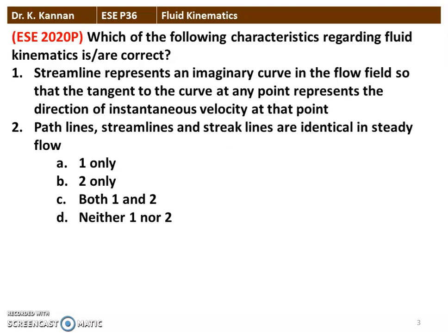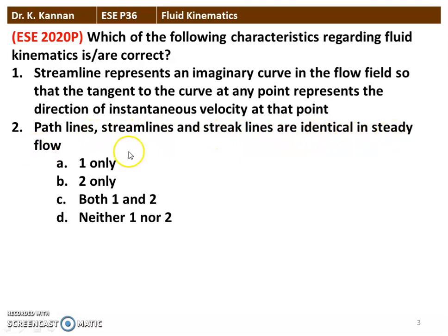Next question from the 2020 question paper: which of the following characteristics regarding fluid kinematics is correct? Statement 1: stream line represents an imaginary curve in the flow field so that the tangent to the curve at any point represents the direction of the instantaneous velocity at that point. Statement 2: path line, stream line, and streak lines are identical in the steady flow condition. Both statements 1 and 2 are true — that is the correct answer.